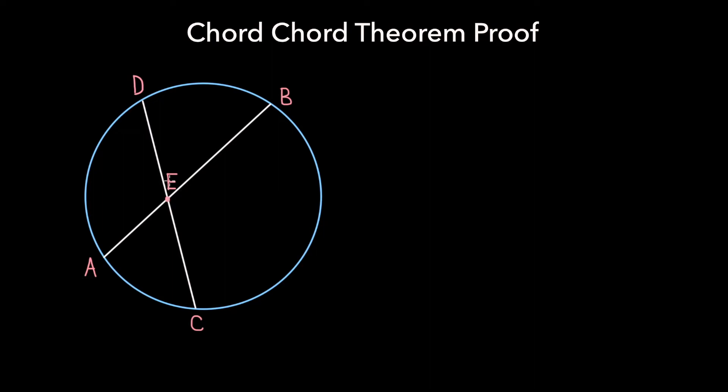In this video, we will be proving the Chord-Chord Theorem, which says that if you have two chords within a circle, AB and CD, that intersect at a point E, then AE times EB equals CE times ED.